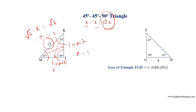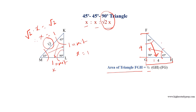For triangle FGH: area equals half multiplied by base GH multiplied by height FG. The base GH is given as 4 units, the side opposite 45-degree angle F. Since angle H also equals 45 degrees, opposite sides of equal angles are equal, so FG equals 4 units. The hypotenuse has length √2 multiplied by 4. Therefore, area of triangle FGH equals half multiplied by 4 multiplied by 4 equals 8 centimeters squared.